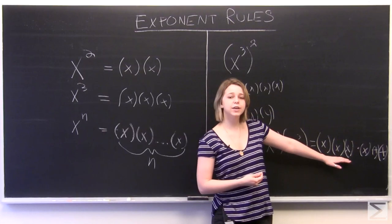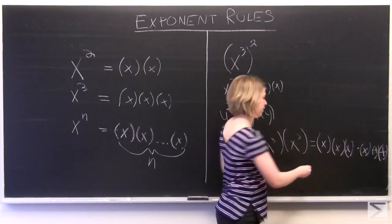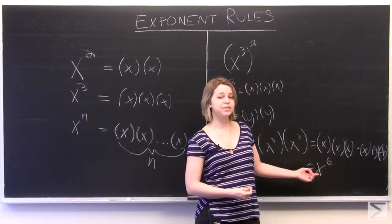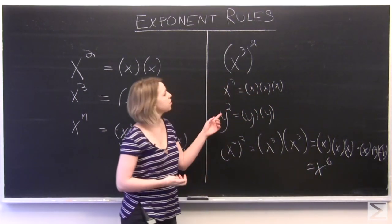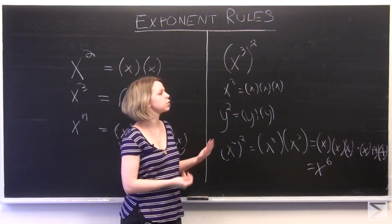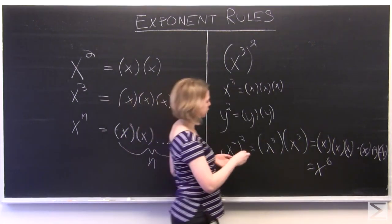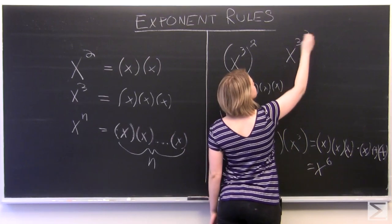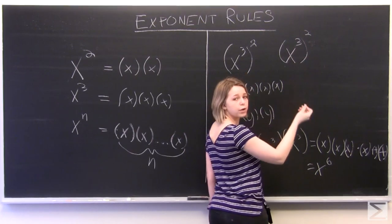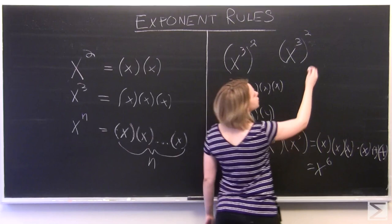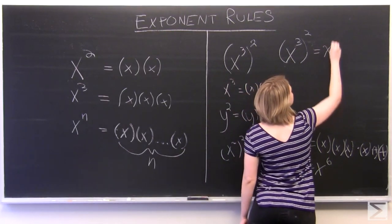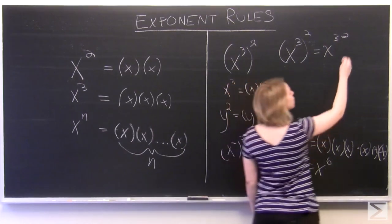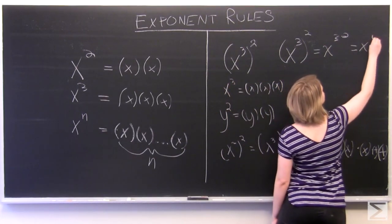So we have six iterations of x being multiplied together. And so we can simplify this to x to the power of six. And so from here, we can create a basic rule. This is one of our laws of exponents. When we have an exponent raised to another exponent, what you're doing is multiplying those two exponents together. x cubed times two. So that would equal x to the power of six.